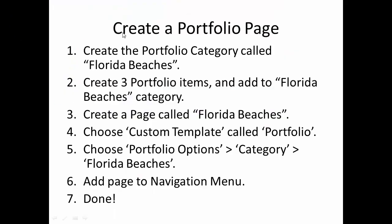Let me open up my PowerPoint here. These are the steps we're going to go over. Once you master these steps, you'll be able to create a portfolio page that shows whichever category of pictures you want. Step one: create the portfolio category called Florida Beaches. Step two: create three portfolio items and add them to the Florida Beaches category. Step three: create a regular WordPress static page called Florida Beaches, choose the custom template named Portfolio, then select the Florida Beaches category from the portfolio options, publish the page, and add it to the navigation menu.